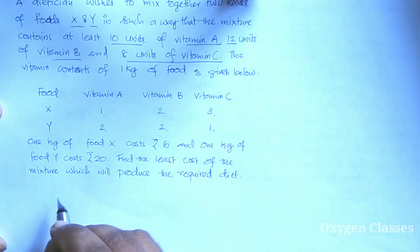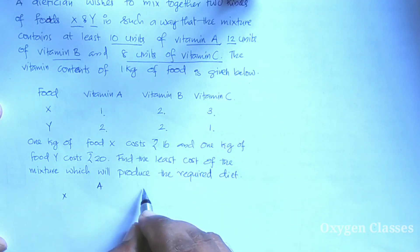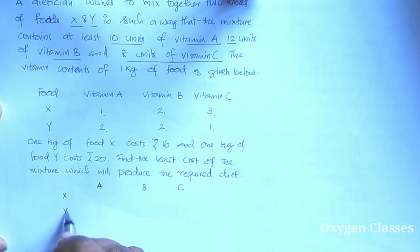We already have the table of values. We have vitamin A, vitamin B, and vitamin C for both X and Y foods. Vitamin A content is 1 and 2, vitamin B content is 2 and 2, vitamin C is 3 and 1.